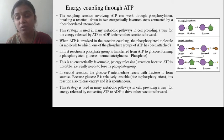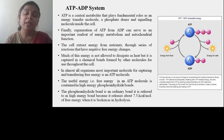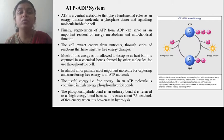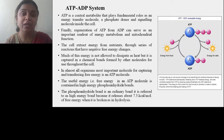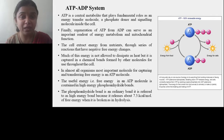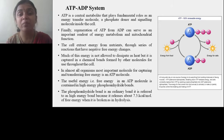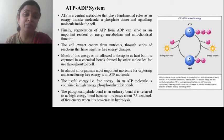The ATP-ADP system involves the conversion of ATP to ADP and the conversion of ADP back to ATP. ADP is the central metabolite that plays a fundamental role as an energy transfer molecule, a phosphate donor, and a signaling molecule inside the cell. ATP is very important in the cell as an energy transfer agent. Regeneration of ATP from ADP can serve as an important readout of energy metabolism and mitochondrial function.